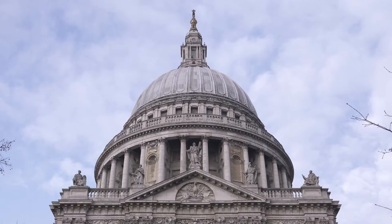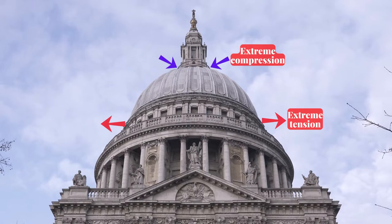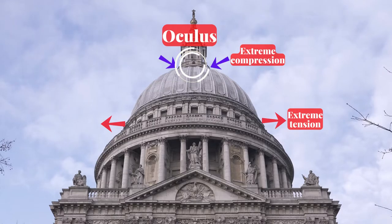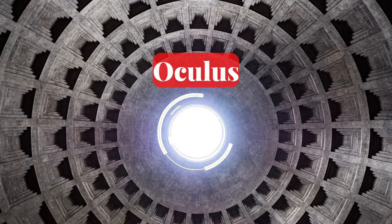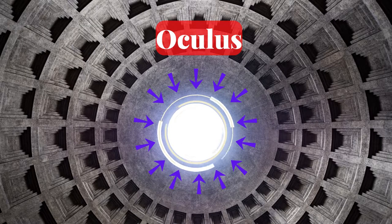The Romans had an ingenious way of dealing with the extreme compression at the top and extreme tension at the bottom, which is the rings at the top and bottom of the dome. The top ring is called the oculus — oculus means 'eye' in Latin. It acts exactly like an arch, except that its ends are joined together. The compression forces cancel each other out and the top of the dome is left in a state of horizontal equilibrium.